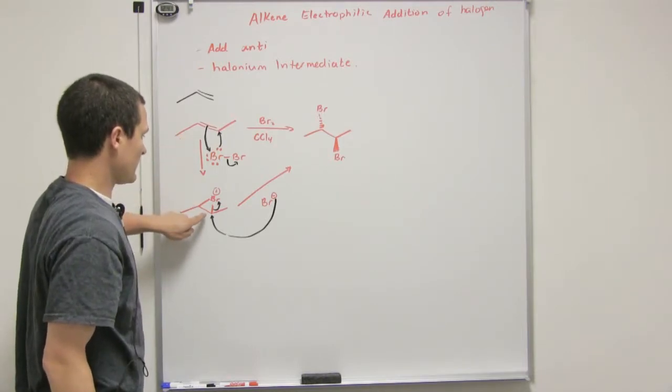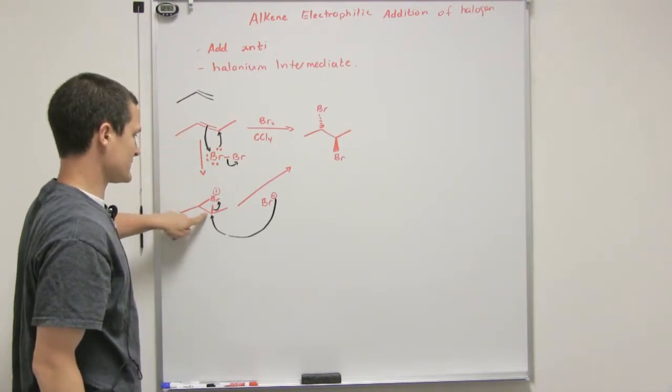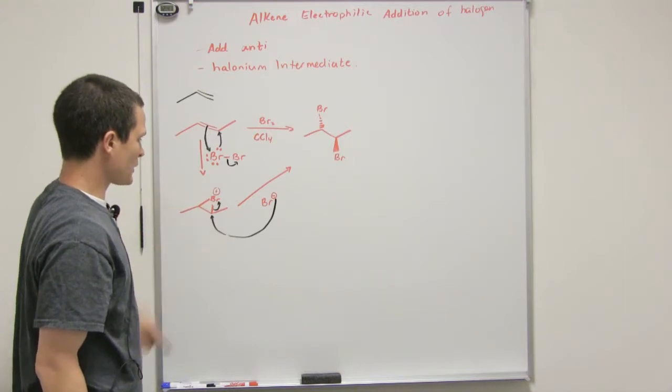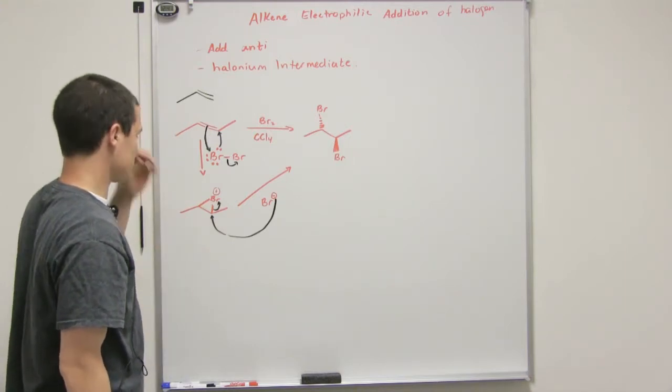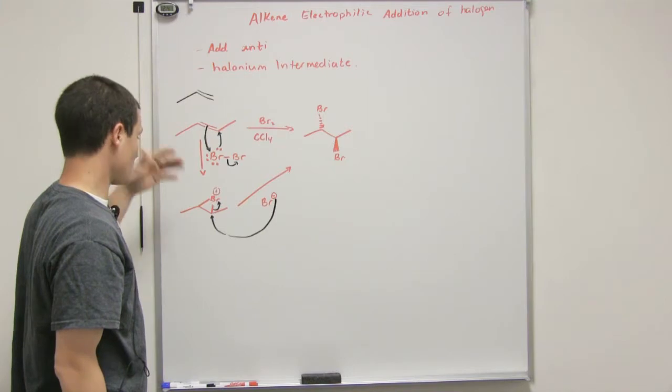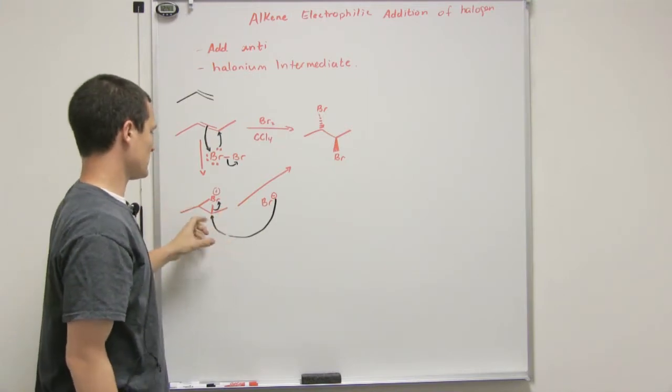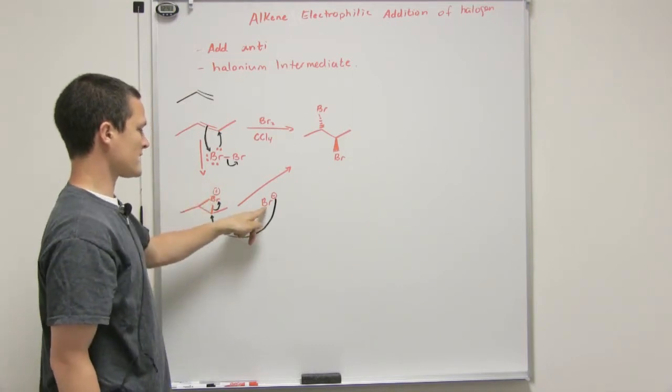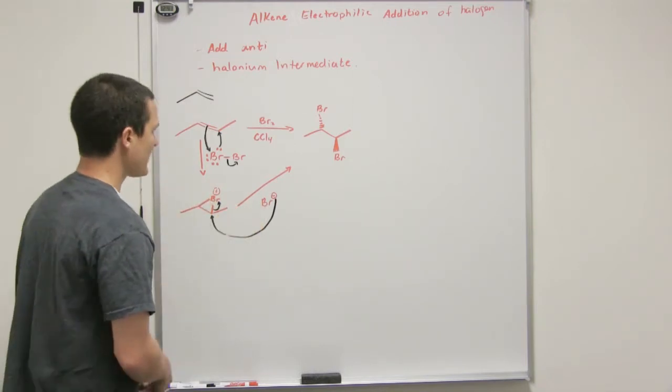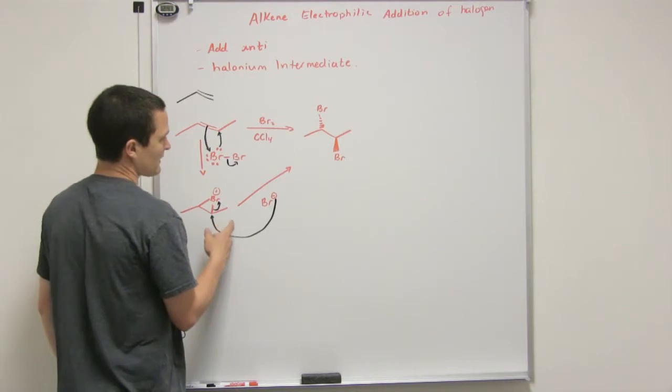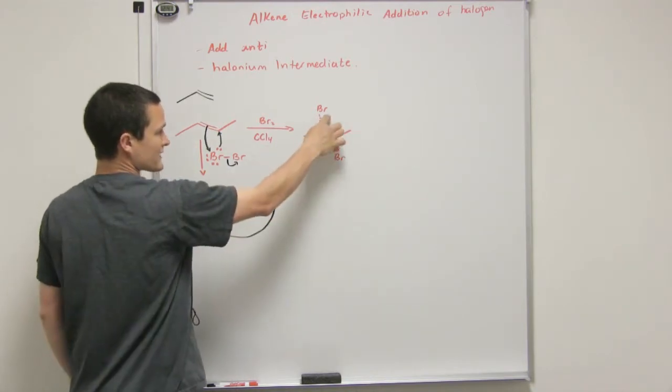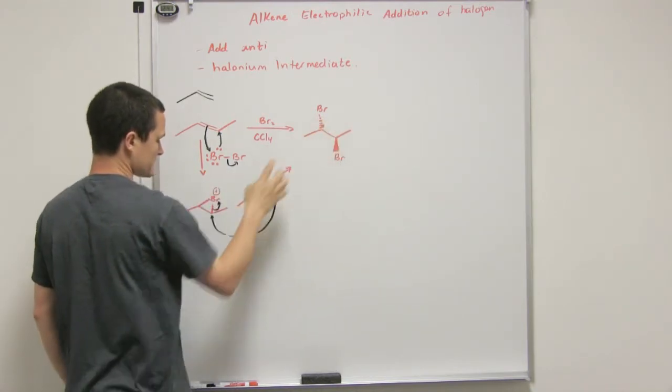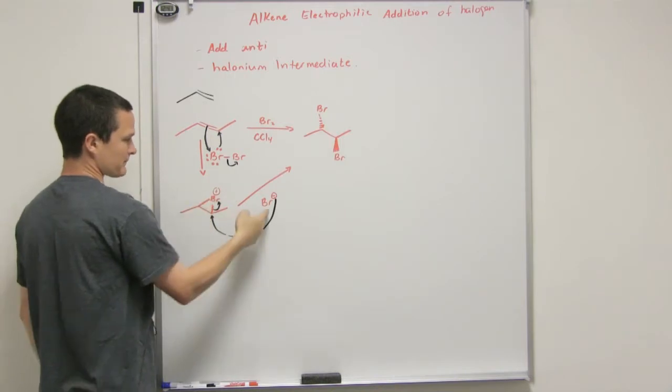We're going to proceed down to the halonium intermediate, which looks like this. I'm not really showing the stereochemistry, but you could go through and figure out if this were both up or if it were back, how this would add to the front or to the back. I'm just saying that it's back, as you can see from what my product is.